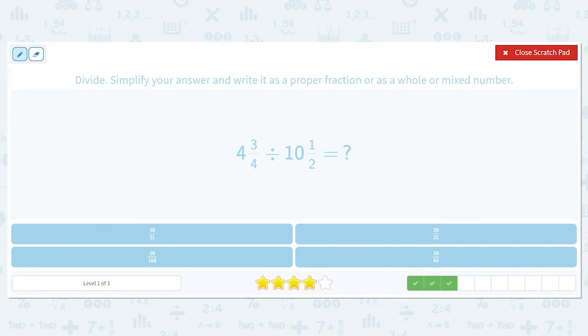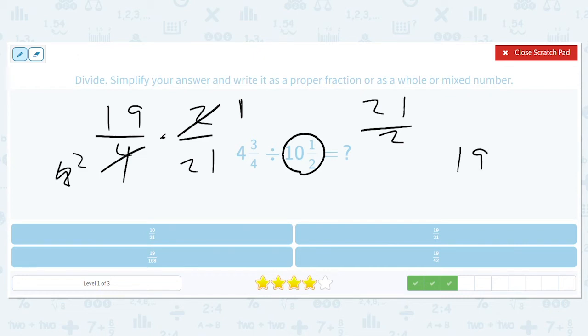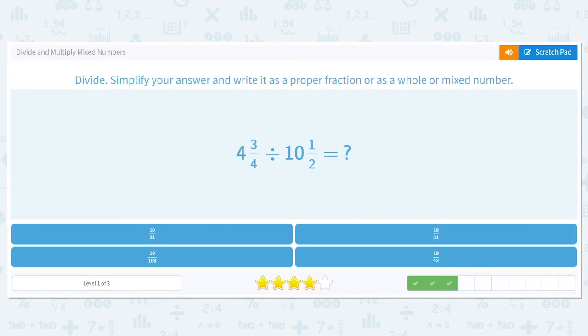Okay, how about this? 4 and 3 fourths, so that's 19 fourths. 10 and 1 half, that's 21 halves. So it should be 19 fourths times 2 over 21. Well, we see if we can cancel anything out, right? So what can we cancel out? We can cancel out this 2. There's not really much else to do. So we end up with 19 over 42. That's simple enough.